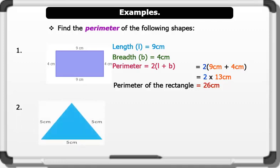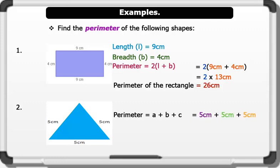2. The triangle on the board. Solution. The perimeter of a triangle equals a plus b plus c. Replacing the letters with the numbers on the shape, we have 5cm plus 5cm plus 5cm. Therefore, the perimeter of the triangle equals 15cm.